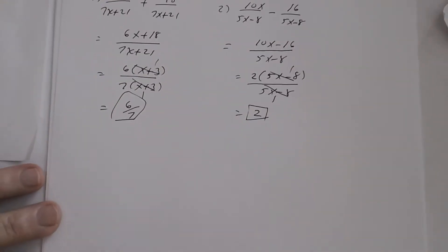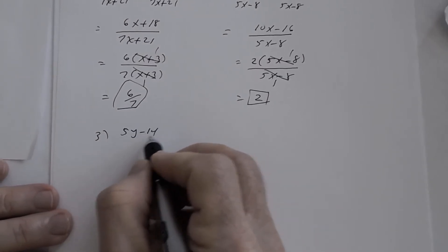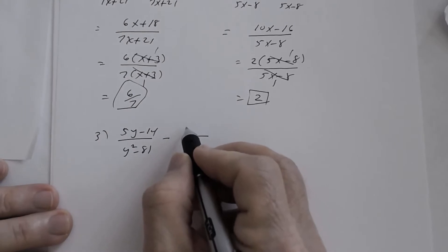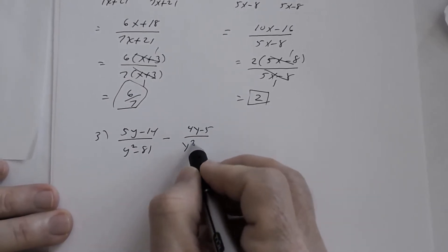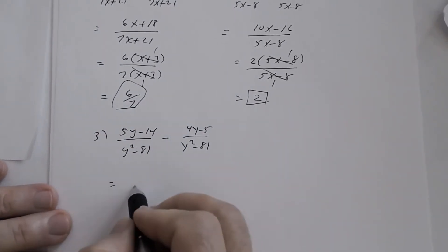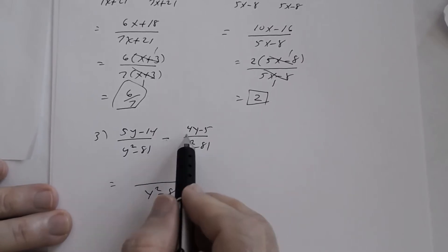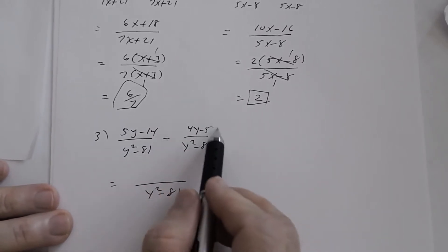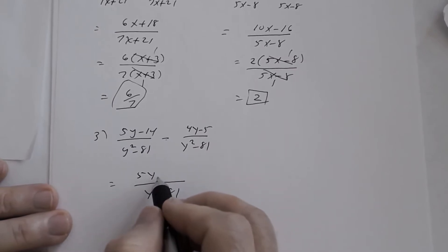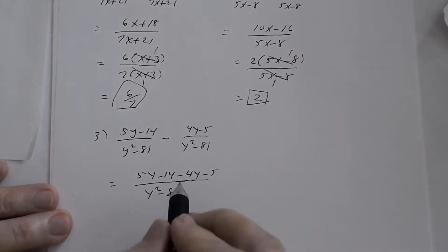Number three: we have 5y minus 14 divided by y squared minus 81, and I'm subtracting 4y minus 5 divided by y squared minus 81. The denominators are the same so I can write it as one rational expression. But you have to be careful, because you are subtracting a polynomial with more than one term. Some of you are going to write it incorrectly — that is not true.